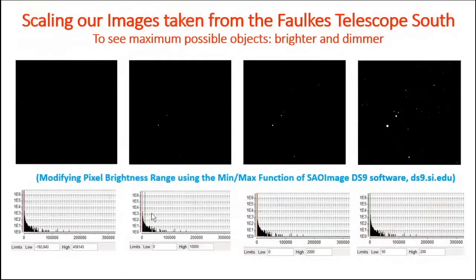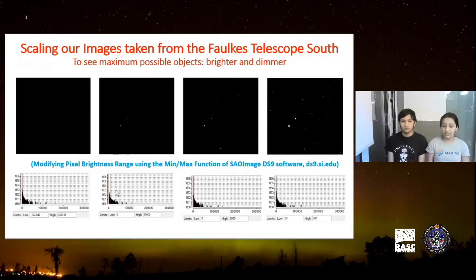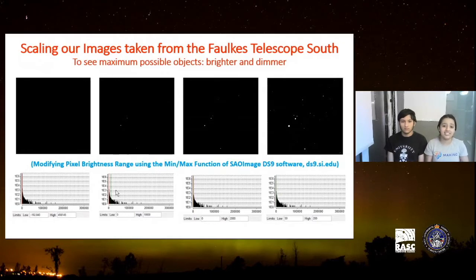The telescope got the image. I had to use special software to open it because it wasn't in a normal JPEG or PNG format — it was in a FITS file format. When I opened the image, I got a black screen with barely anything visible. The reason is that I had to scale the image first. FITS files have more than just the image — they also contain lots of data about the image, such as which telescope took it, when it was taken, and which camera was used. When I tried to open the image, I had to scale the pixel brightness range. The range was too high — from minus 200 to almost half a million.